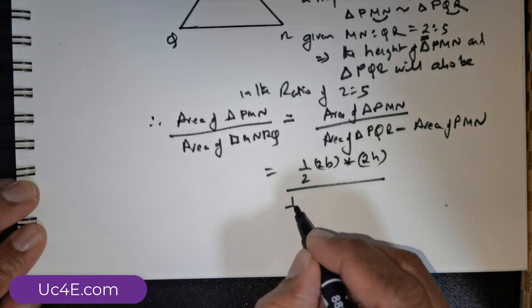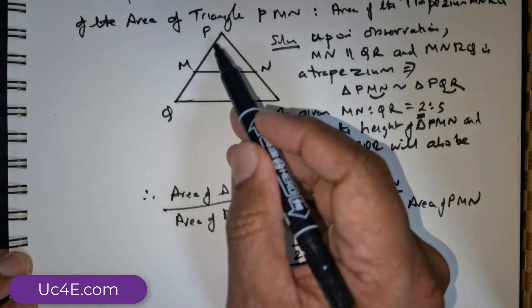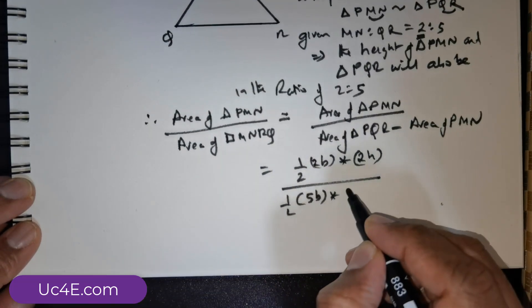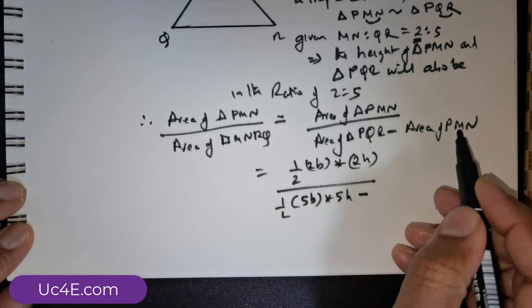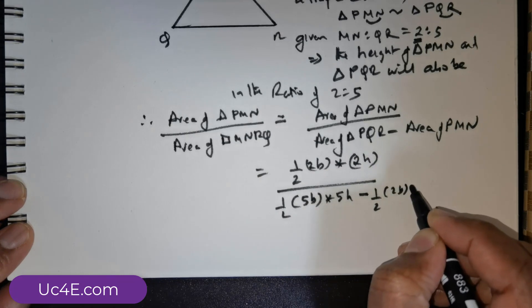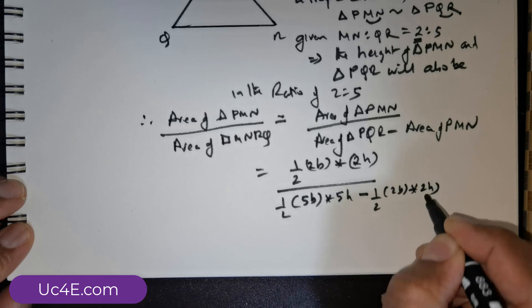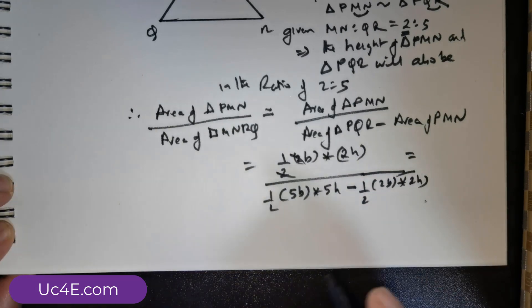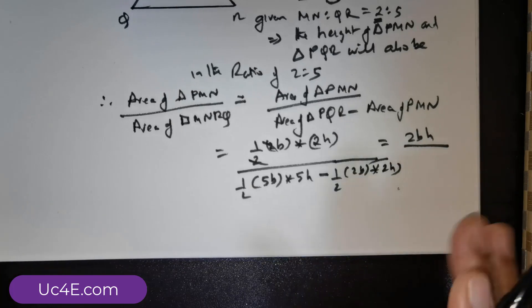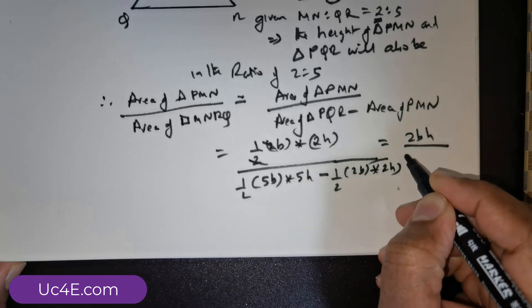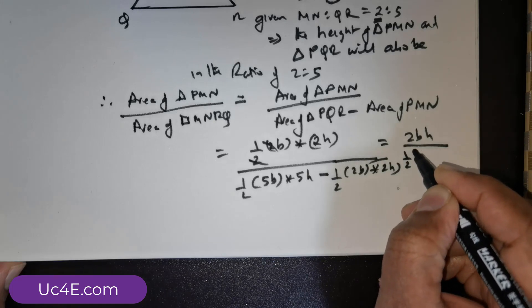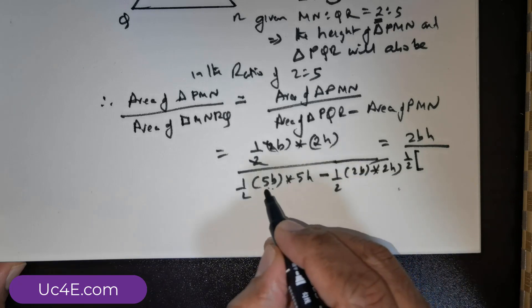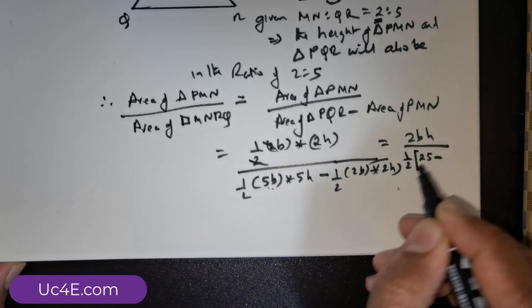So this is divided by 1 over 2 times the area of triangle PQR. The base will be 5 times B and the height will be 5 times H. Minus the area of PMN. We have already got it. That's going to be 1 over 2, 2 times B times 2 times H. So 2 and 2 can be cancelled. So this is equal to 2 times B into H divided by. I can take 1 over 2 out. This is going to be 25 minus 4.